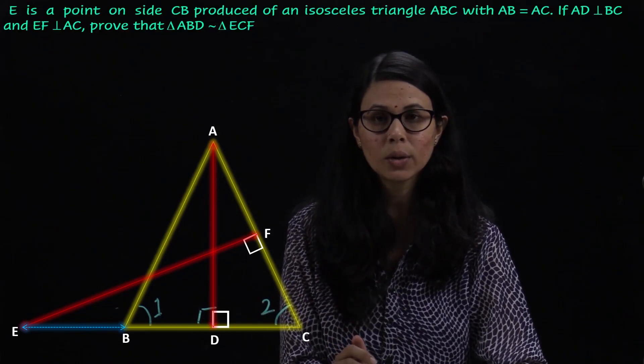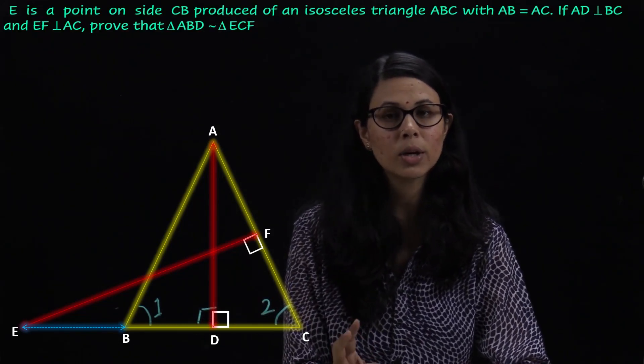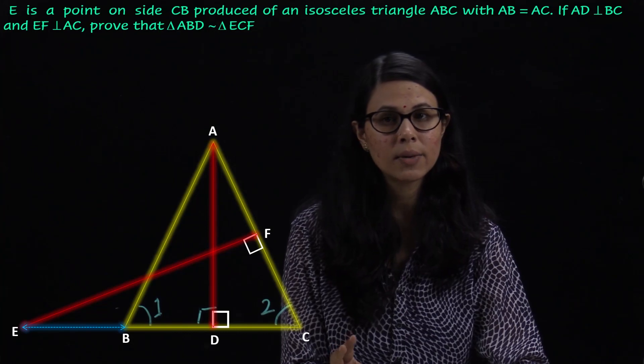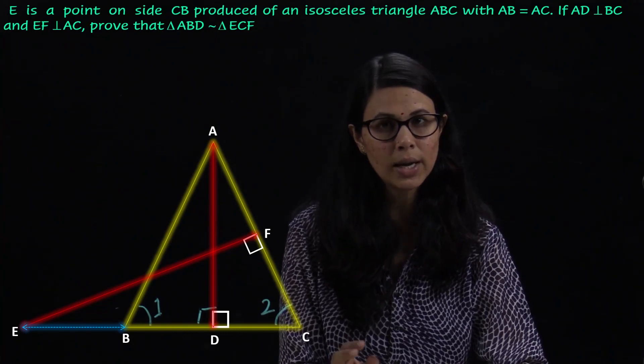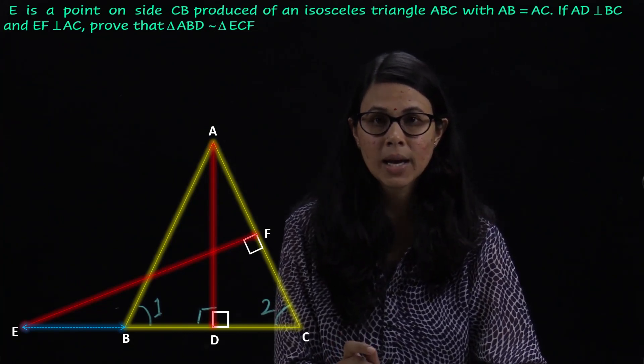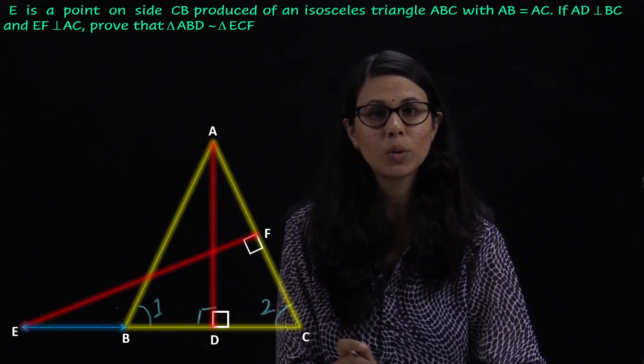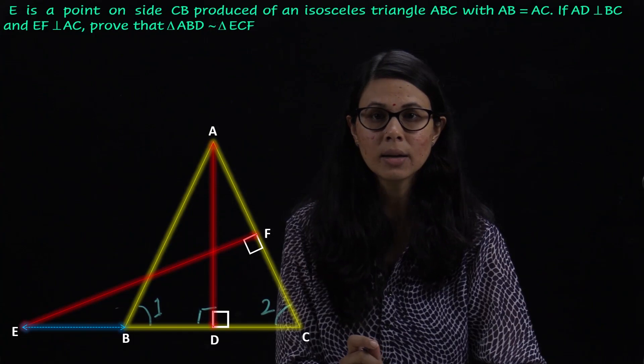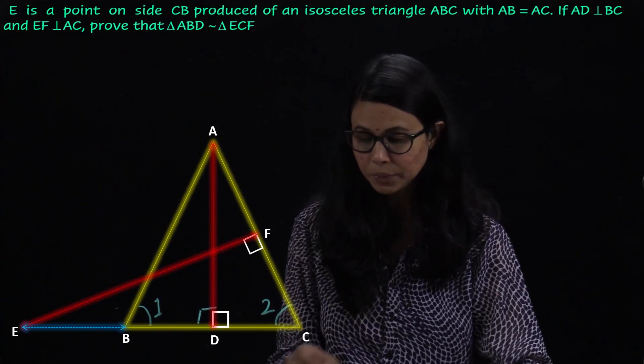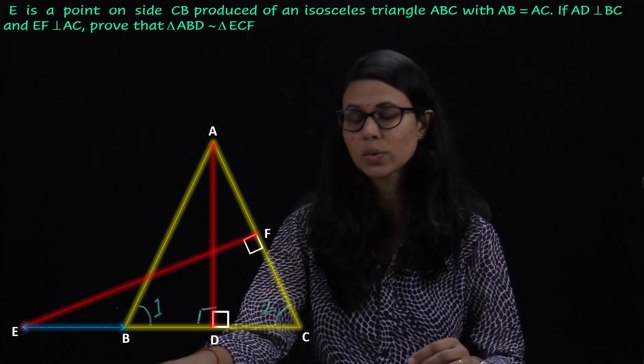Toh dono triangles mein dono corresponding angles ki value equal hai. It means by AA similarity, both triangles are similar.